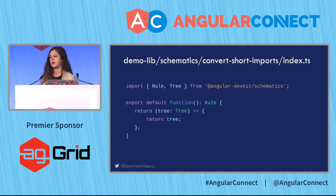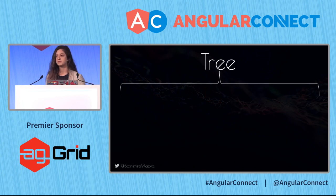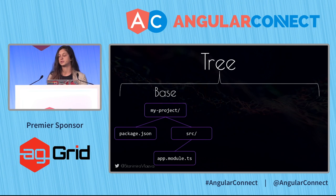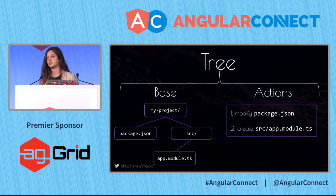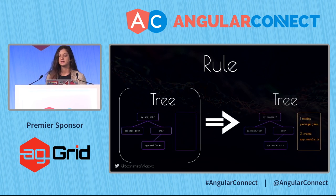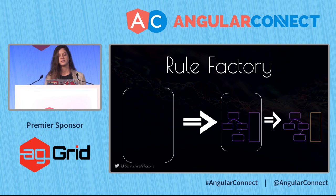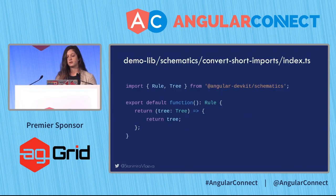The factory contains the actual schematic you have to write — a function that returns another function. Let's look at some schematics theory. The most important object in the schematics library is called a Tree. The Tree contains a base (a representation of the project you're executing the command in) and also contains actions — the actual modifications that will be applied to the file system. A Rule is a function which takes a Tree and returns another Tree. A Rule Factory is a function which returns a Rule, so it's a function which returns another function.